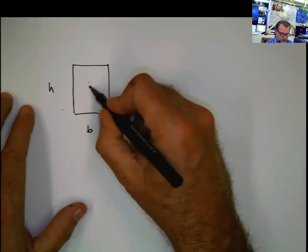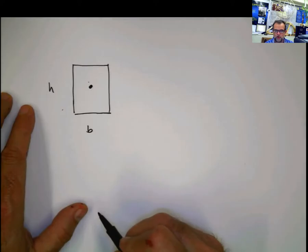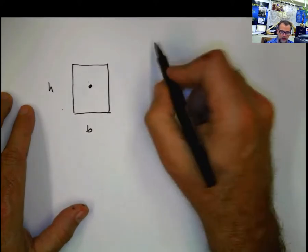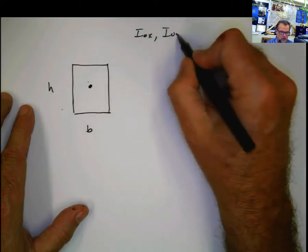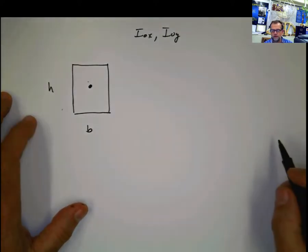b times h, and we're going to do it with respect to the centroid of the section, meaning we are going to be doing centroidal moment of inertia with respect to x and centroidal moment of inertia with respect to the y-axis.